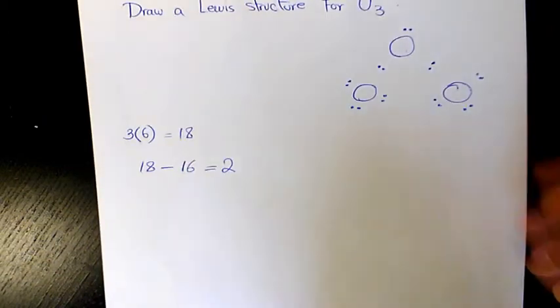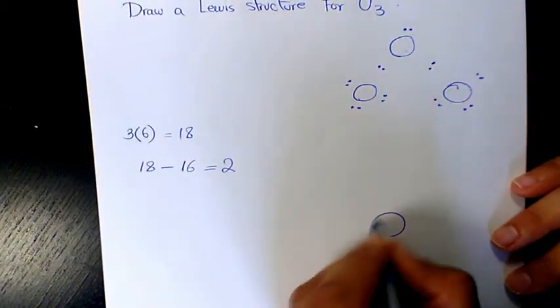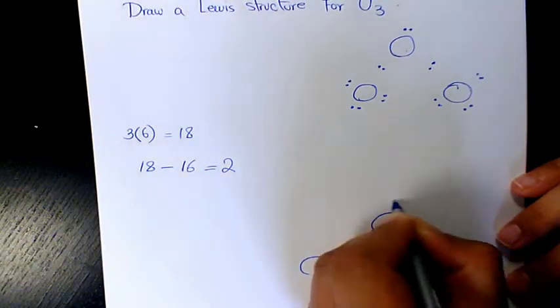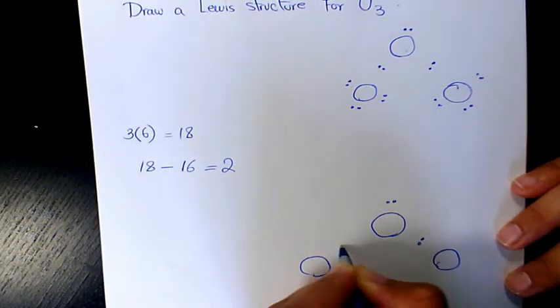So I need to place two more electrons on the central atom. Now what I need to do, I need to check if we have octet. So it's basically like that.